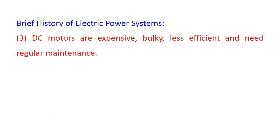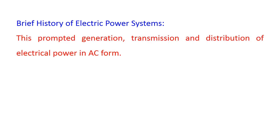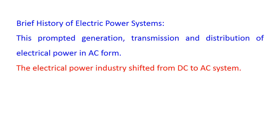DC motors are expensive, bulky, less efficient, and need regular maintenance. On the contrary, if AC supply is used, the induction motor is very economic, compact, and needs little maintenance. The advantages of electrical power in AC form prompted generation, transmission, and distribution of electrical power in AC form, and the electrical power industry shifted from DC to AC system.